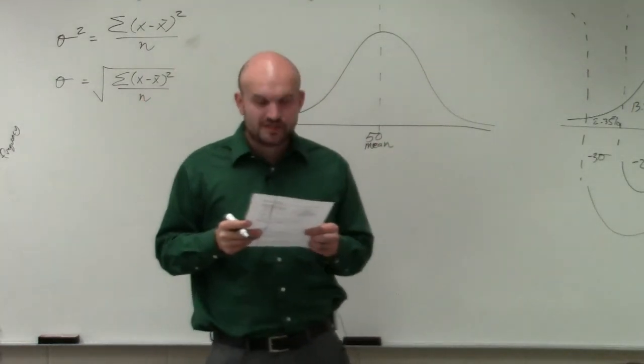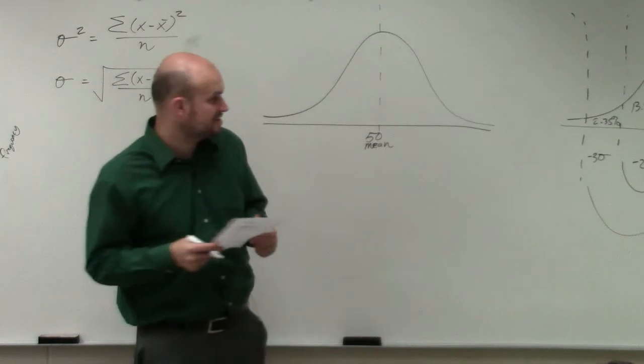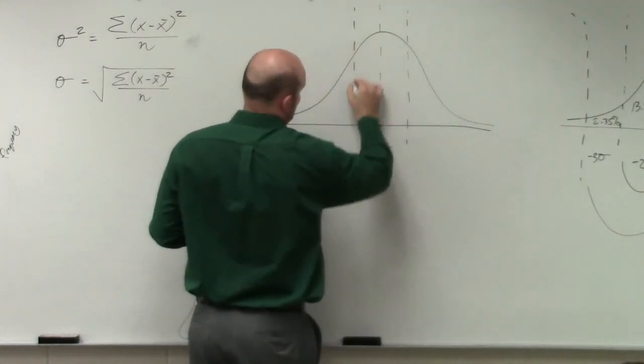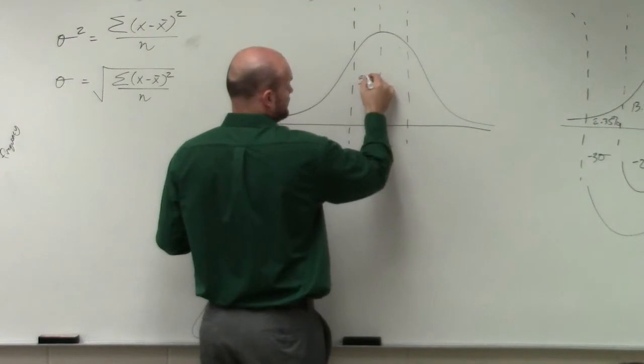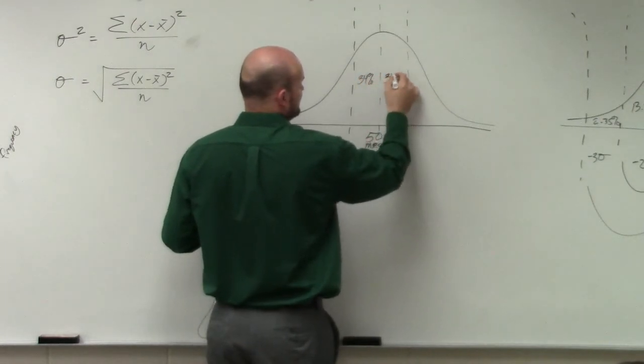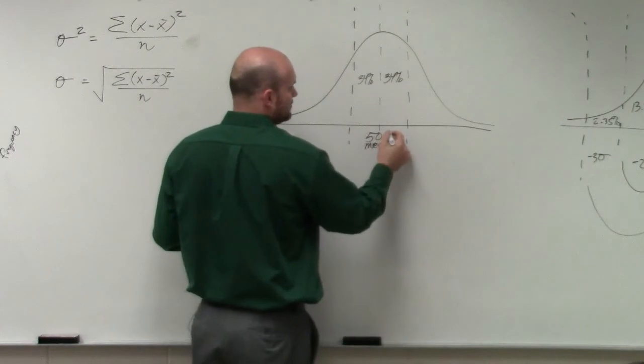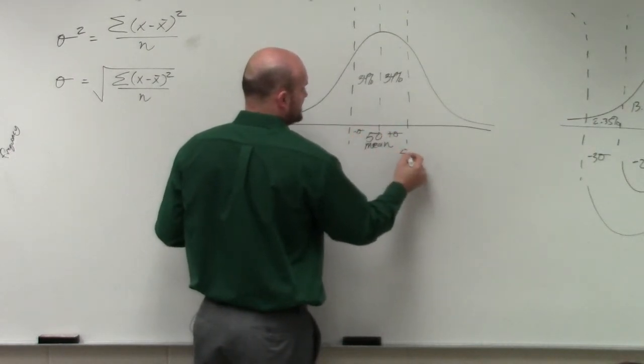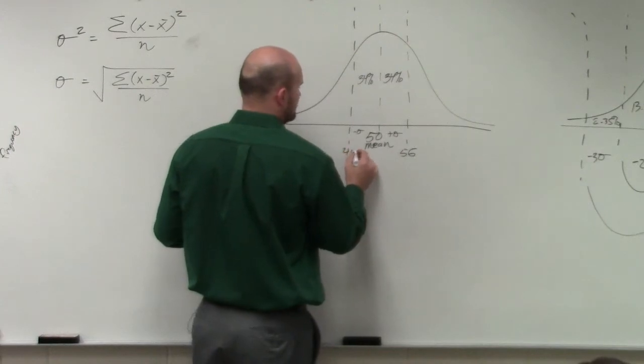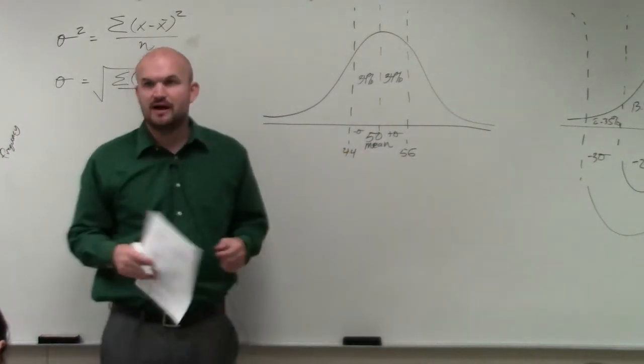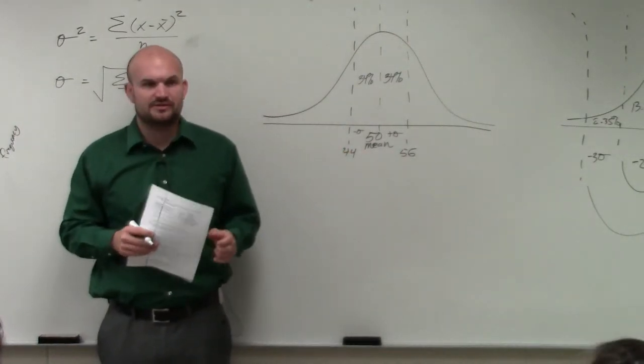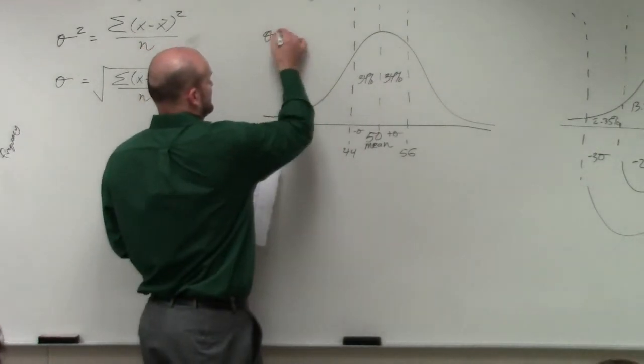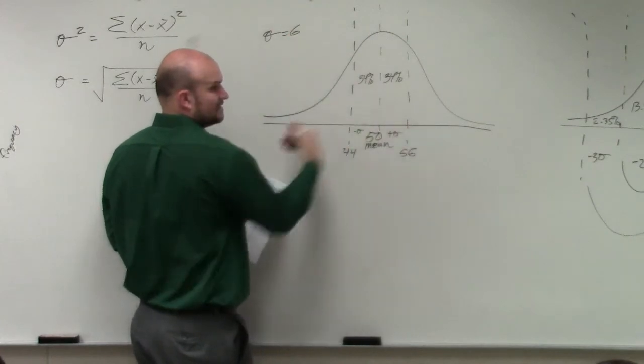Then they say that we have one standard deviation is 6. So we know that within the first standard deviation, we have 34% of the data. So if I'm going to add one standard deviation, I'm now going to have 56 and 44. Does everybody follow me on how I found those values within the first standard deviation? They say standard deviation is equal to 6. So I add it and subtract it.